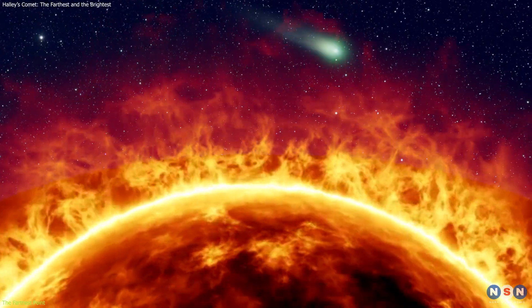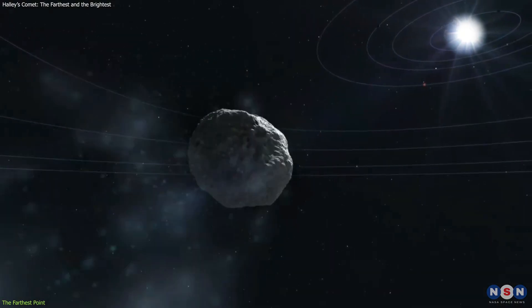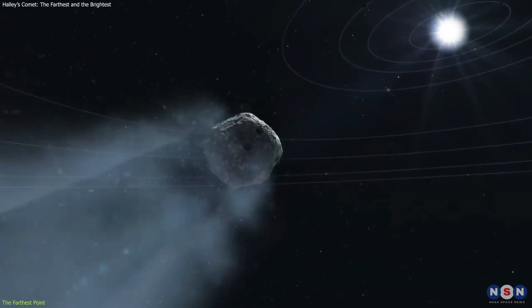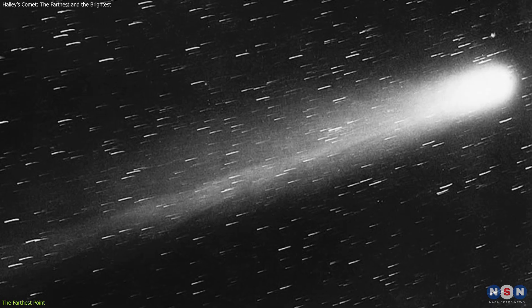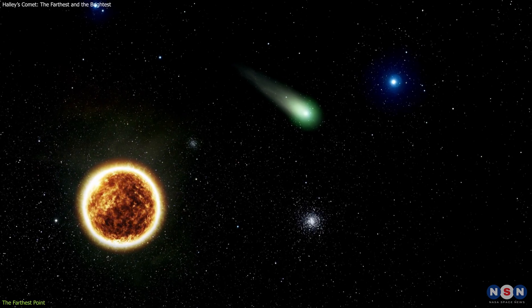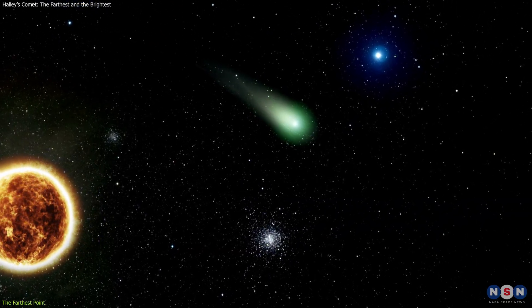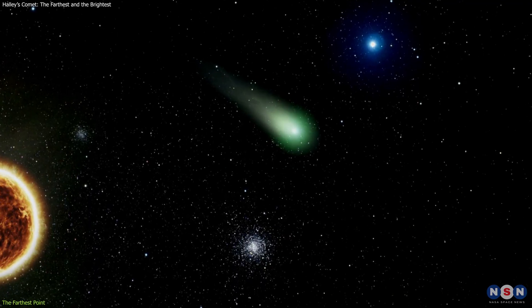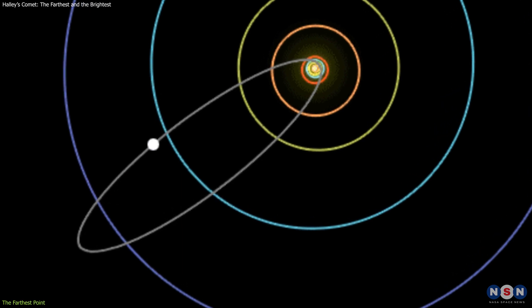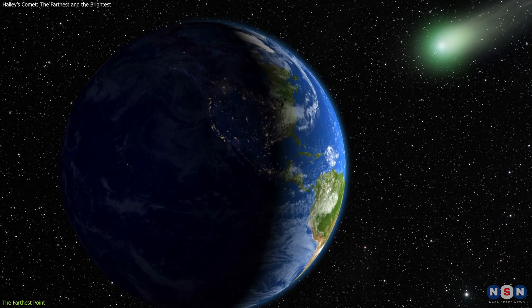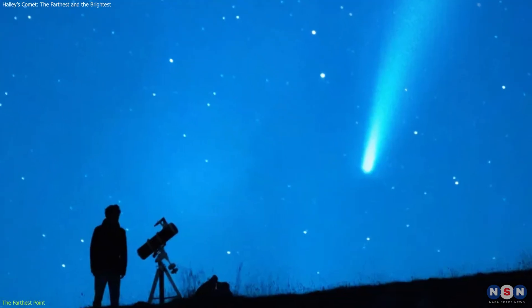Well, it matters because the distance from the sun affects the comet's motion and appearance. The closer the comet is to the sun, the faster it moves, and the more it heats up and releases gas and dust, forming a bright coma and tail. The farther the comet is from the sun, the slower it moves, and the less it heats up and releases gas and dust, becoming dimmer and less active. This means that the comet's brightness and activity vary greatly throughout its orbit, and that it is only visible from Earth when it is near its perihelion, as it only happens once in a human lifetime.